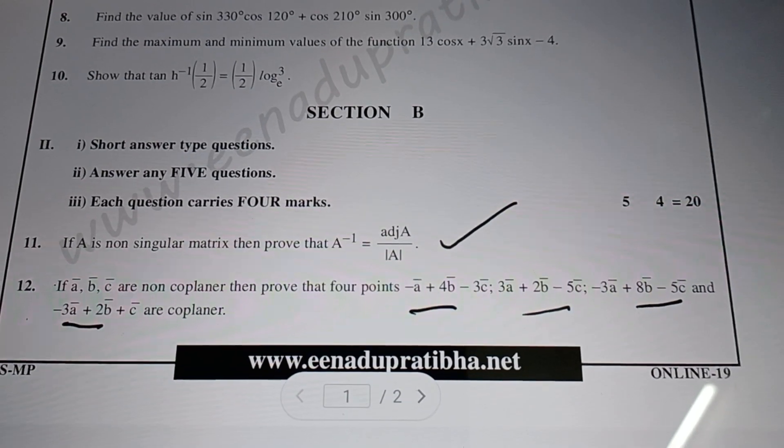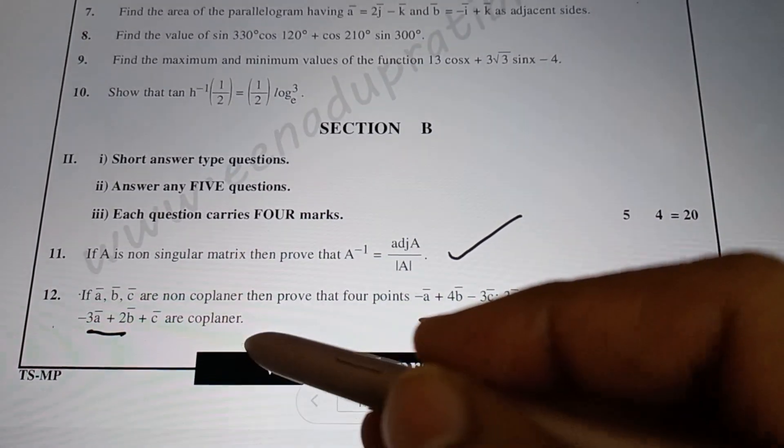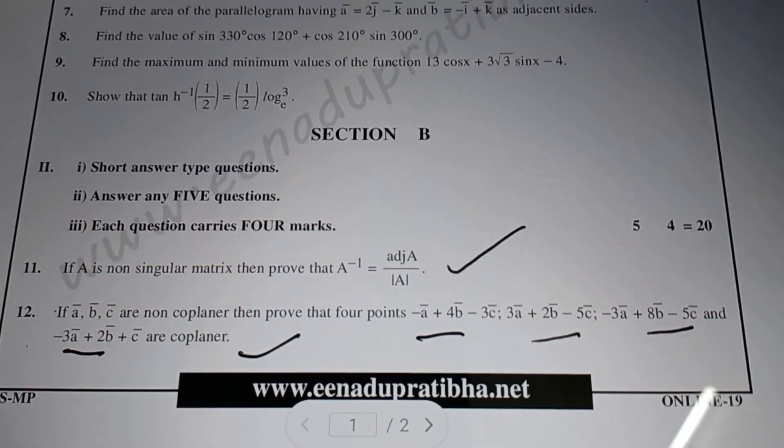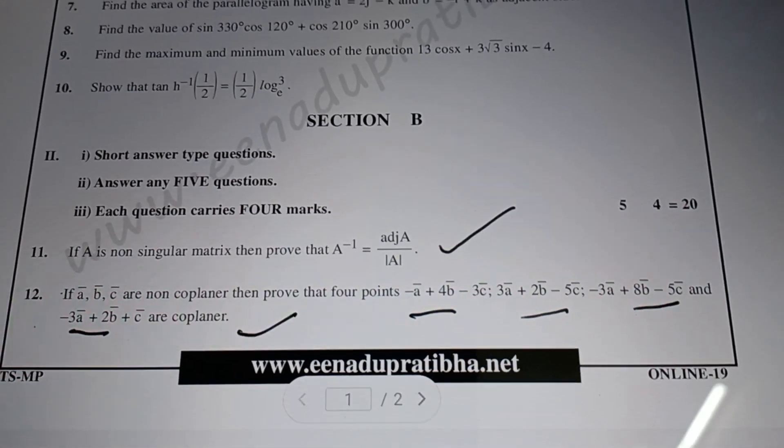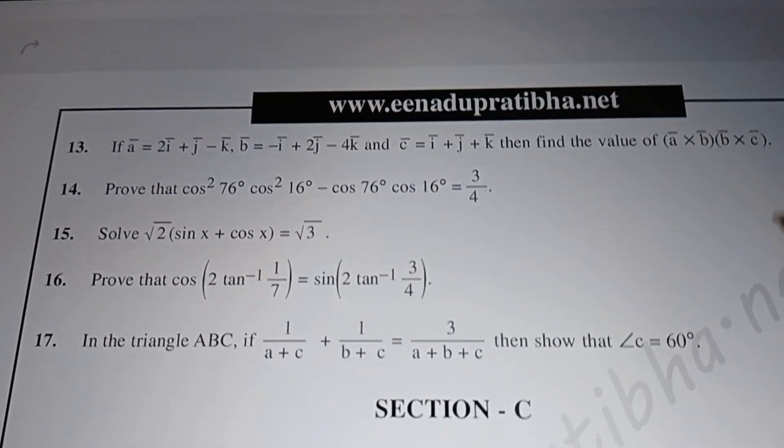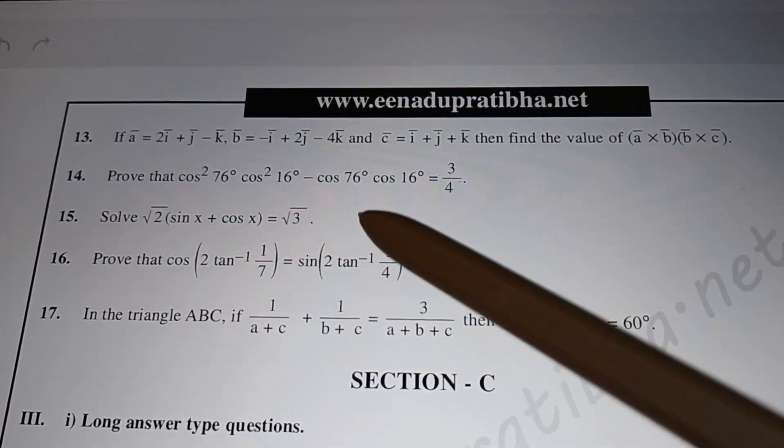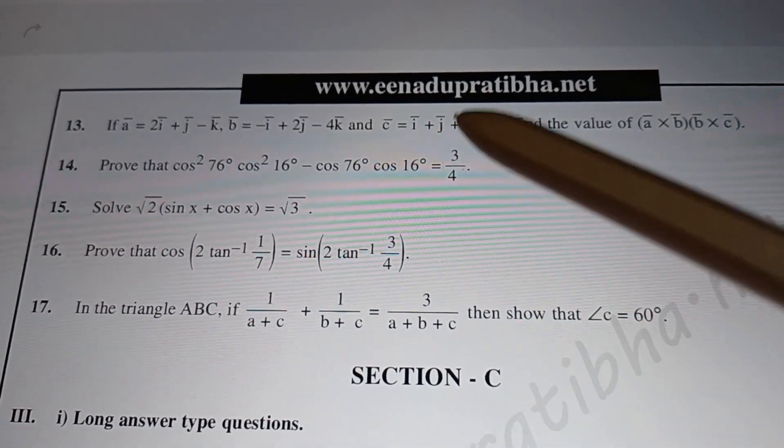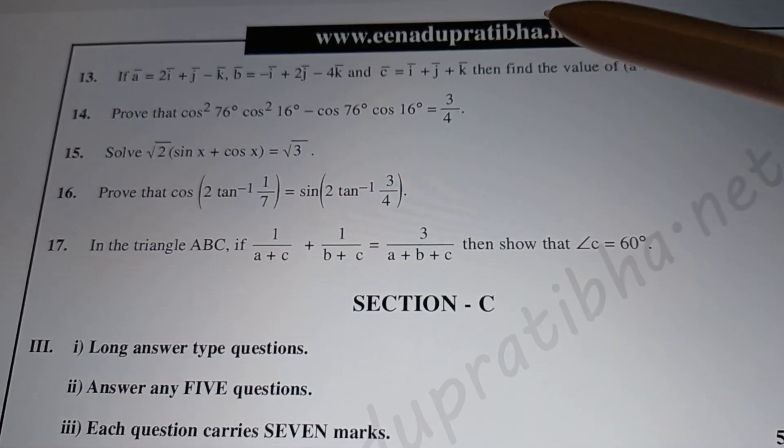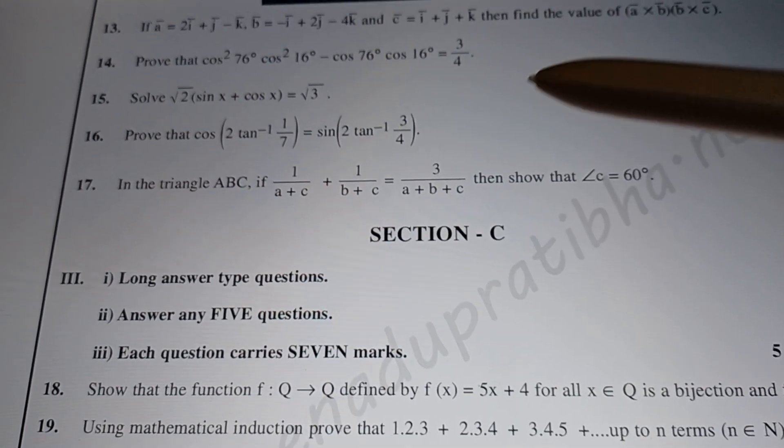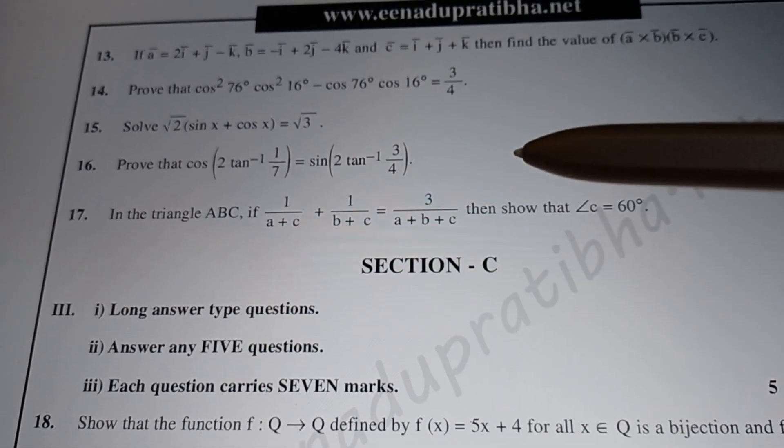The 13th question involves A cross B and B cross C, finding determinants. Both 12th and 13th questions are on vectors. Questions 14th, 15th, 16th, and 17th - the last four questions are on trigonometry.